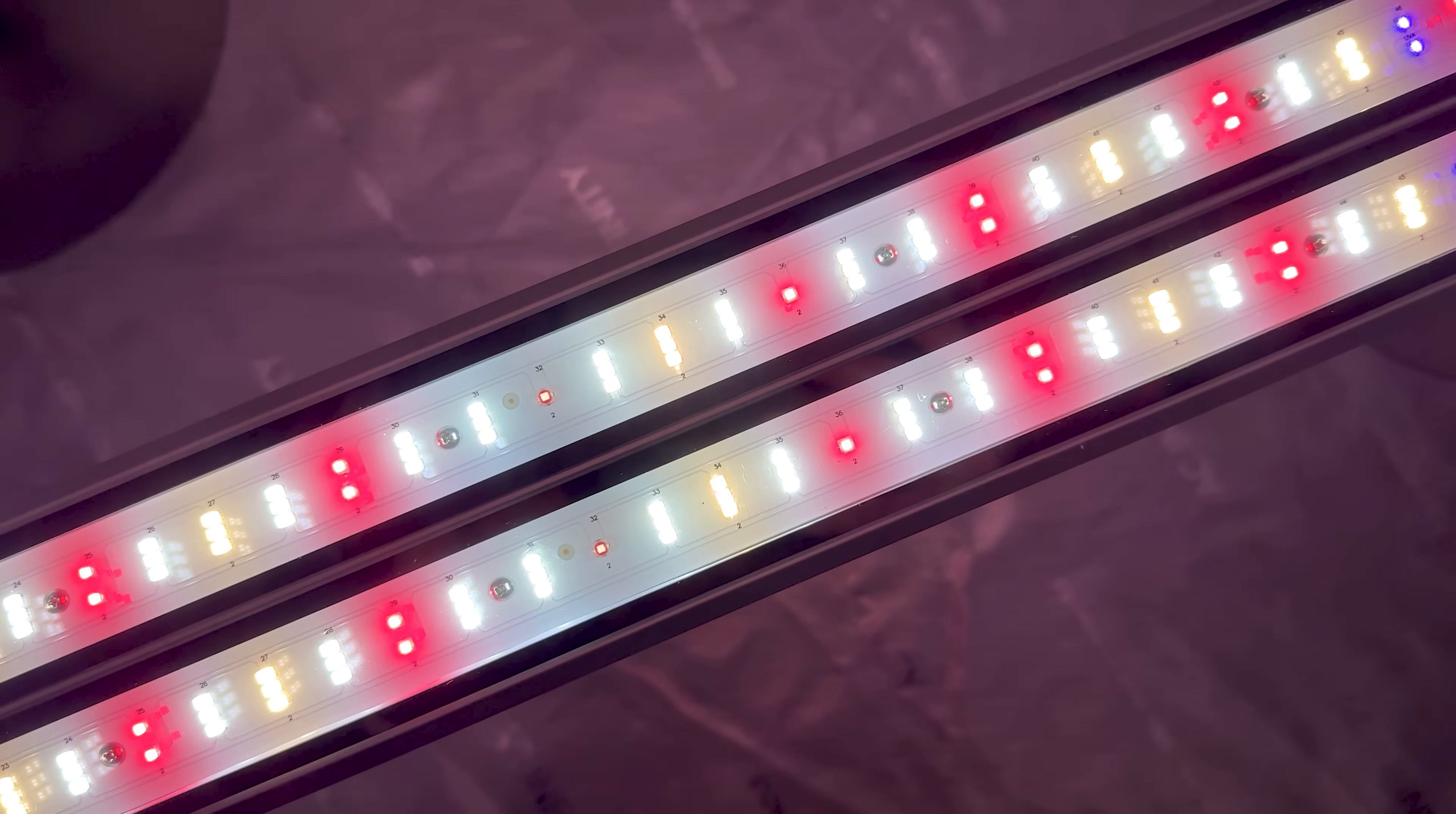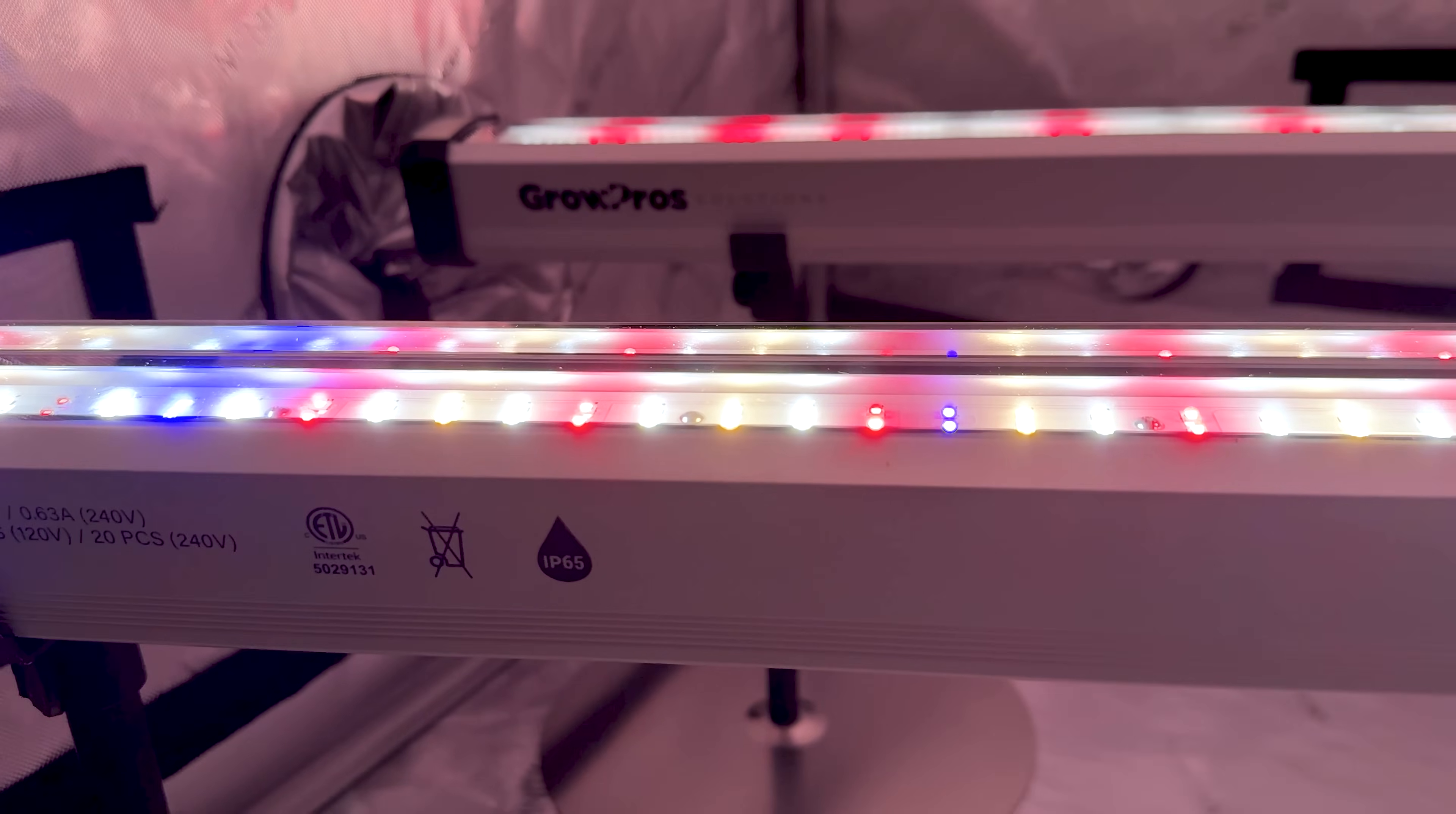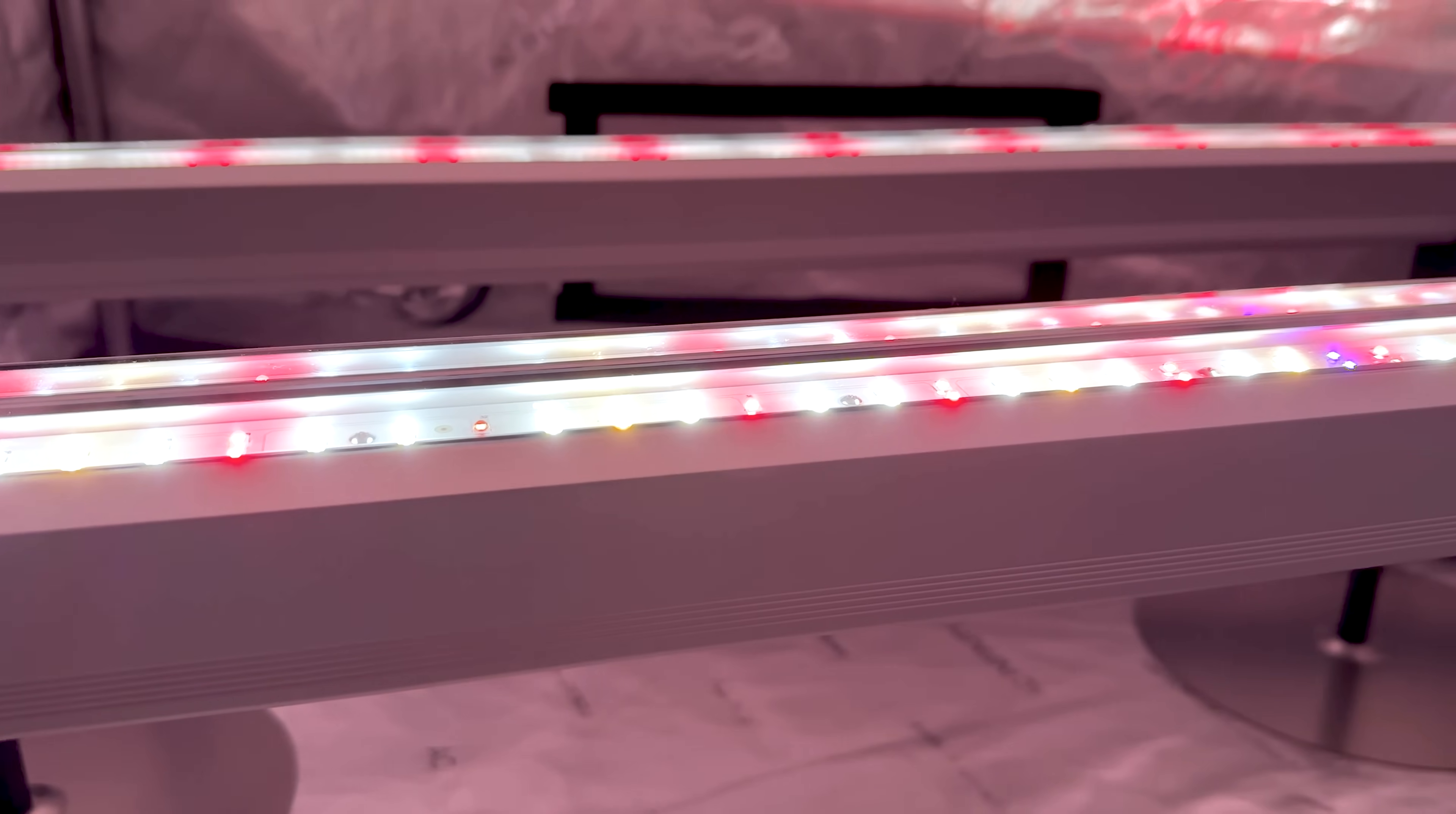These 150 watt lights come in two different models, each designed to optimize your grow in unique ways. Each light is sold in packs of two and 8 foot 300 watt versions are available for larger scale applications.